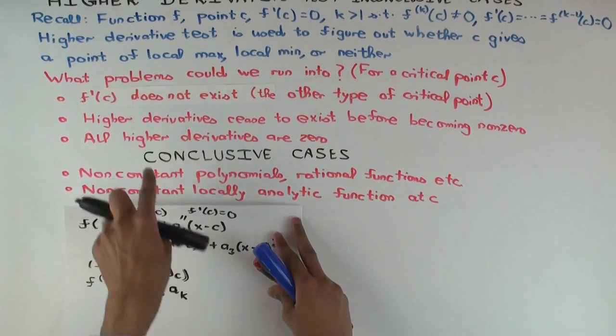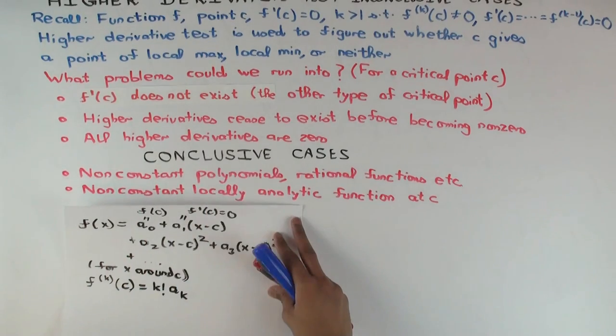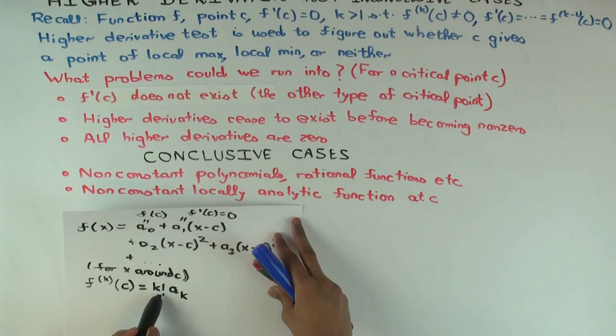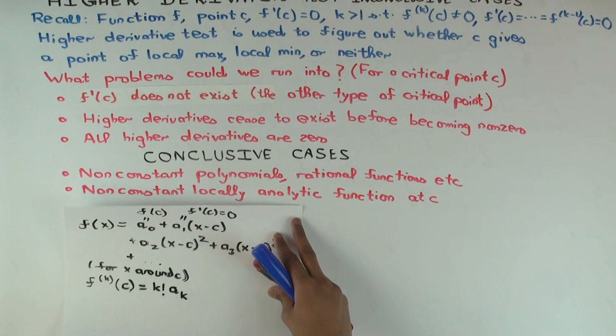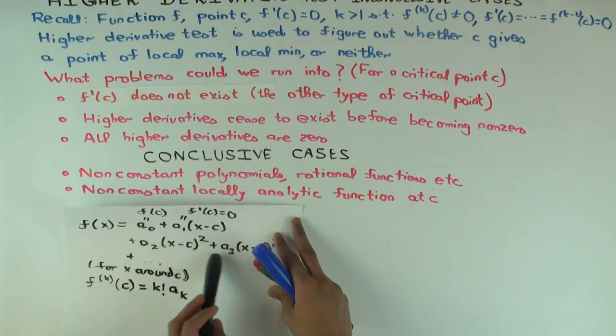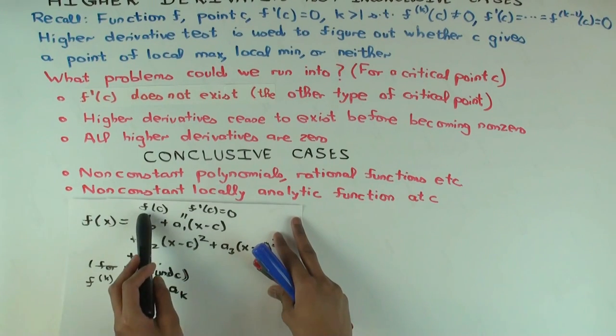So, if you had this problem, all the higher derivatives become 0, then that would mean all of these are 0 for k equal to 1, 2, 3, and so on, which means all of these are 0. Since k factorial is non-zero, that would tell you that all the A terms are 0. All the Ak's are 0 except A naught. So, what would f(x) become? It would just become A naught plus 0 plus 0 and so on, so it just becomes A naught, so it just becomes f(c).